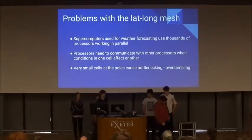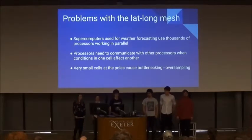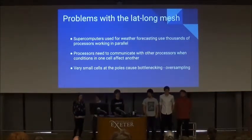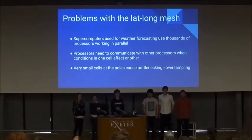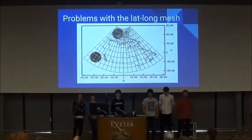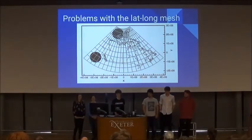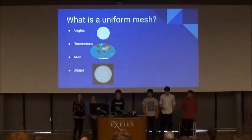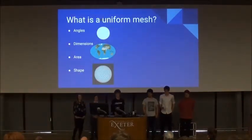The latitude and longitude mesh is the most widely used mesh in the world, but it has a number of problems when trying to model climate on supercomputers. Since each core handles a single cell on the mesh, and they have to communicate as weather patterns spread across the globe. But towards the poles, the cells become much closer together, so many more cores have to communicate with each other, which can drastically slow down the computation. So we say that the latitude and longitude mesh is not very uniform.